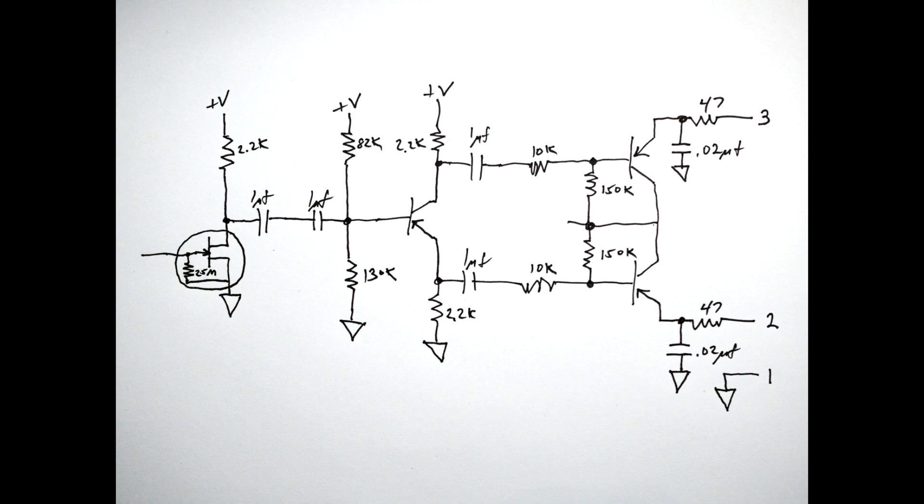Out of the JFET, the signal goes through two capacitors. And I'll explain why there's two capacitors. But there's a one microfarad capacitor and another one microfarad capacitor. So the AC signal passes through those.